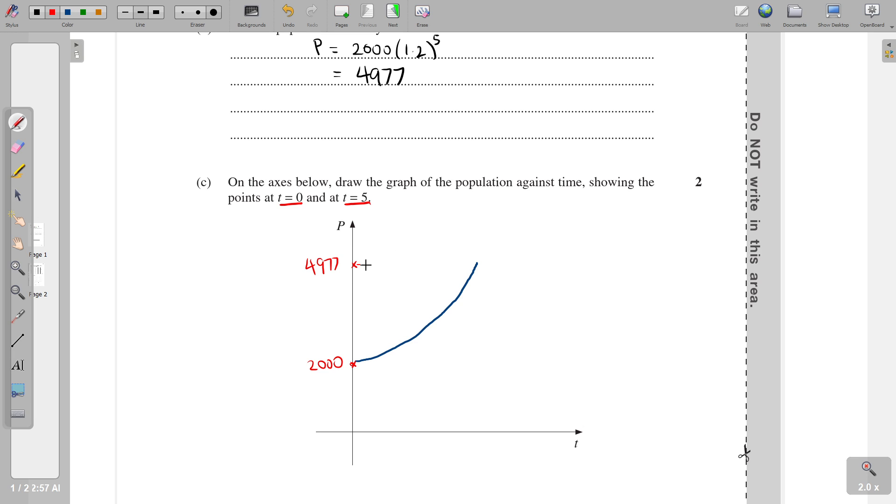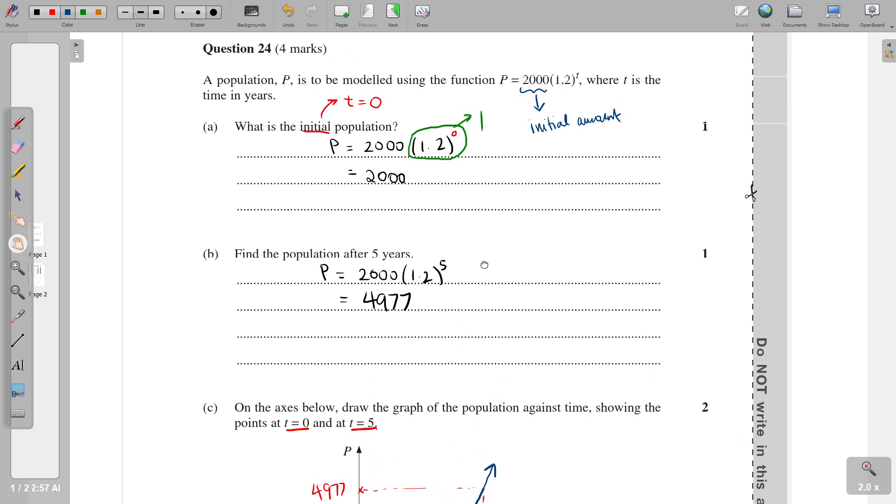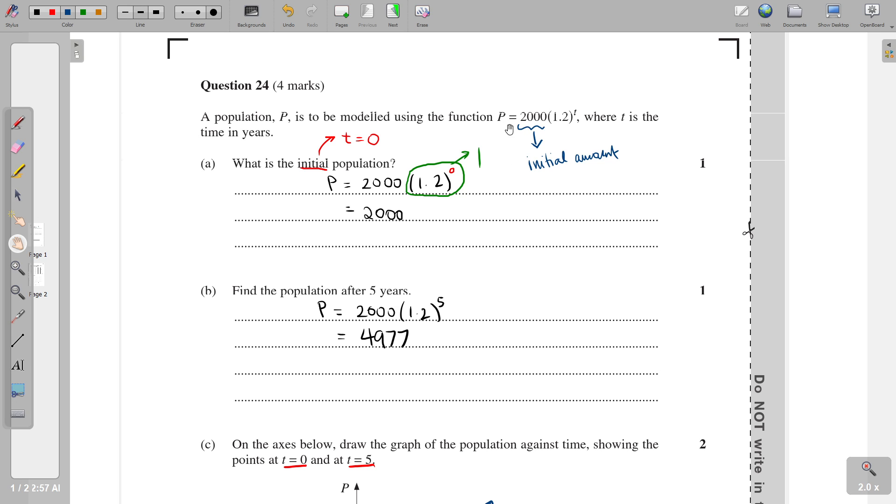And so it might be helpful to just indicate that that's the 4977 there. And this is for five. And we may as well keep this going as well. So that's the first one. A bit of just calculation here, but really understanding the role of this number at the front here telling you the initial amount or the initial value.